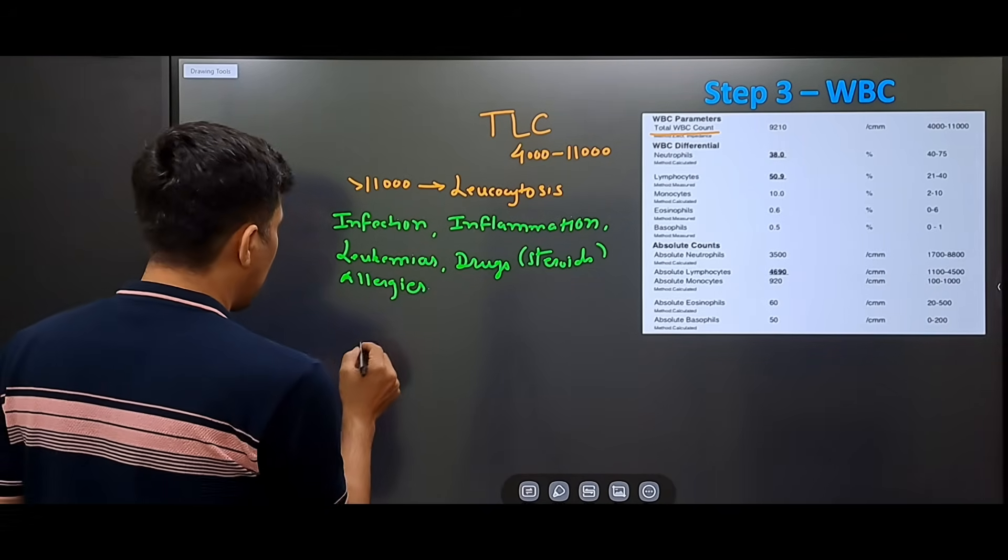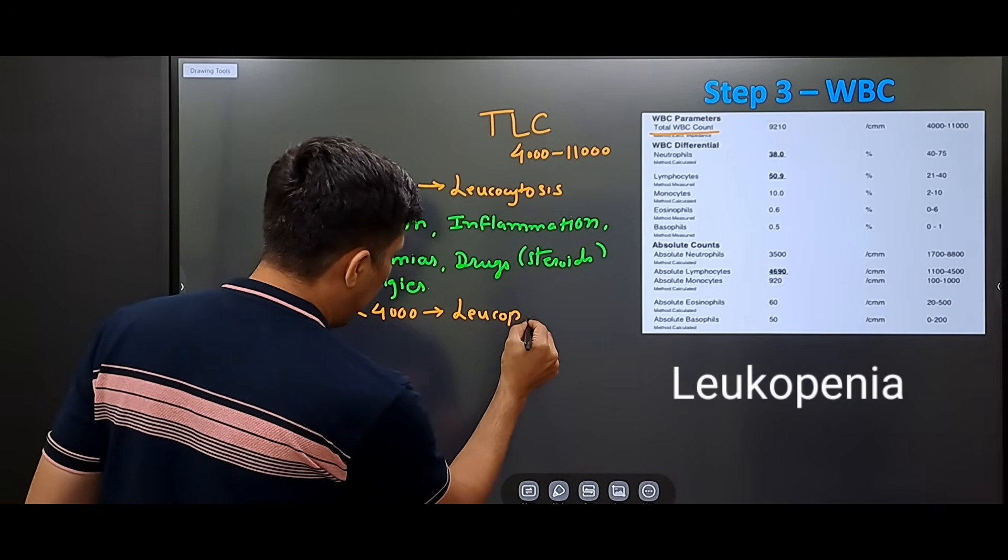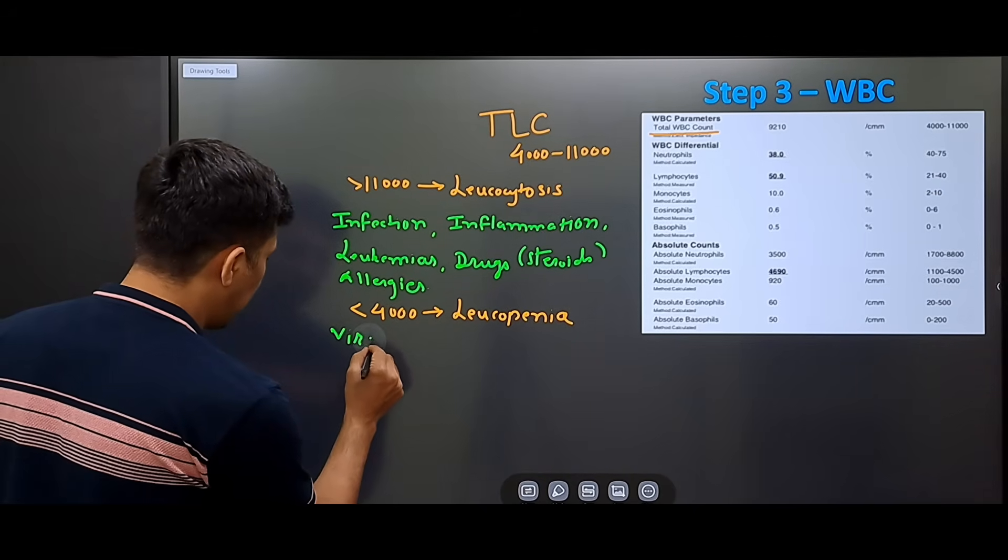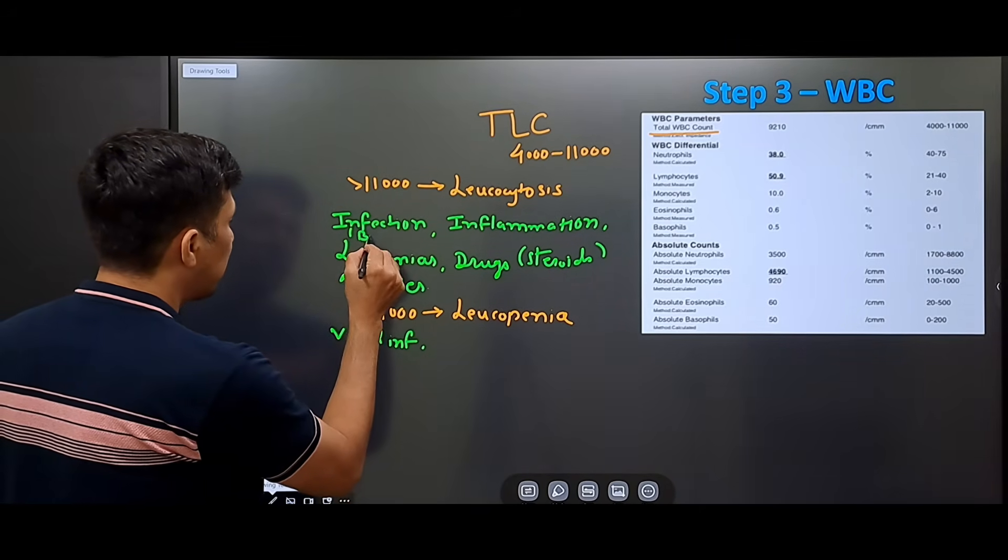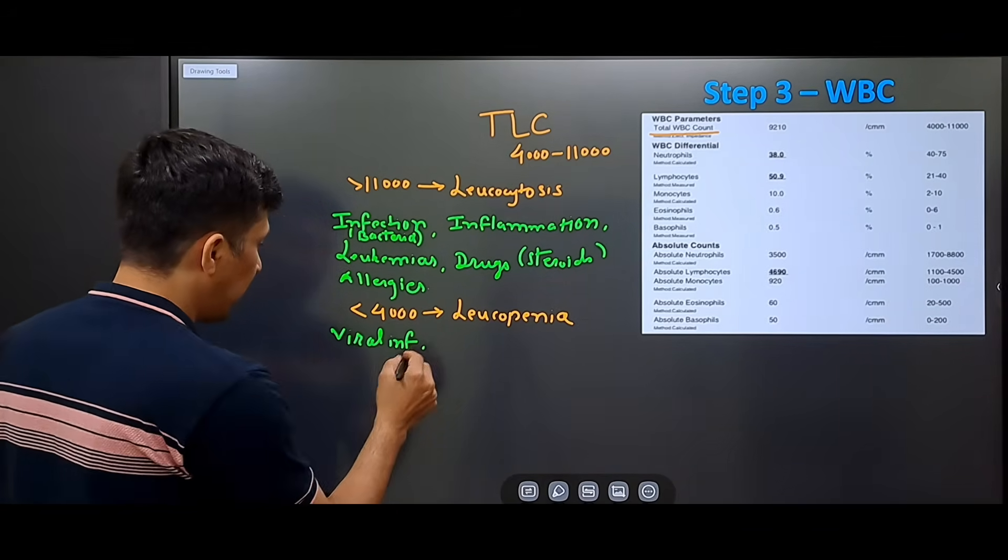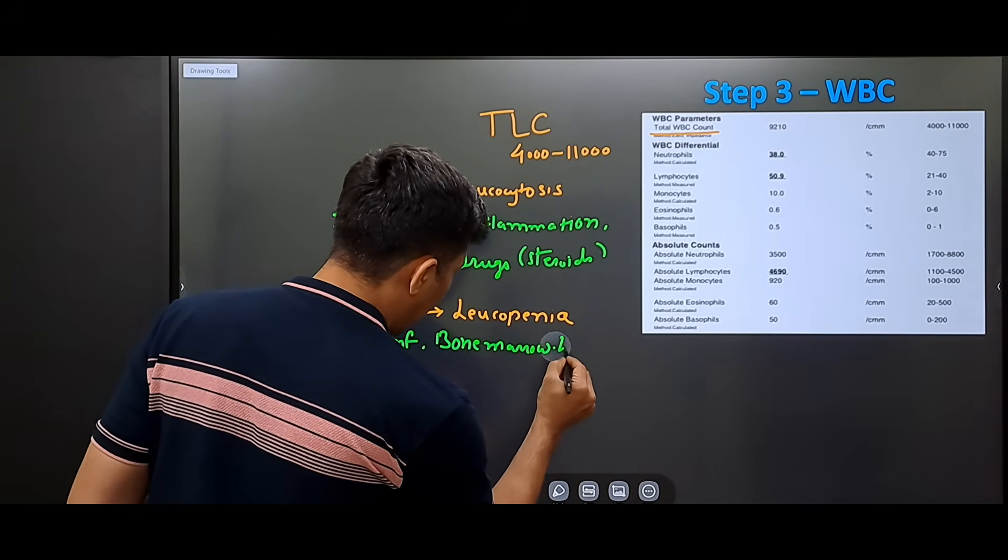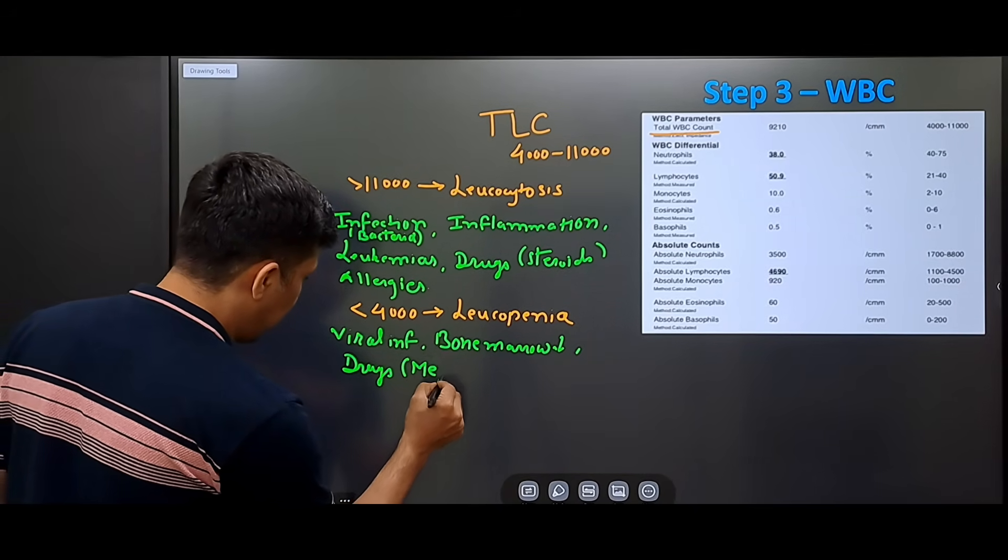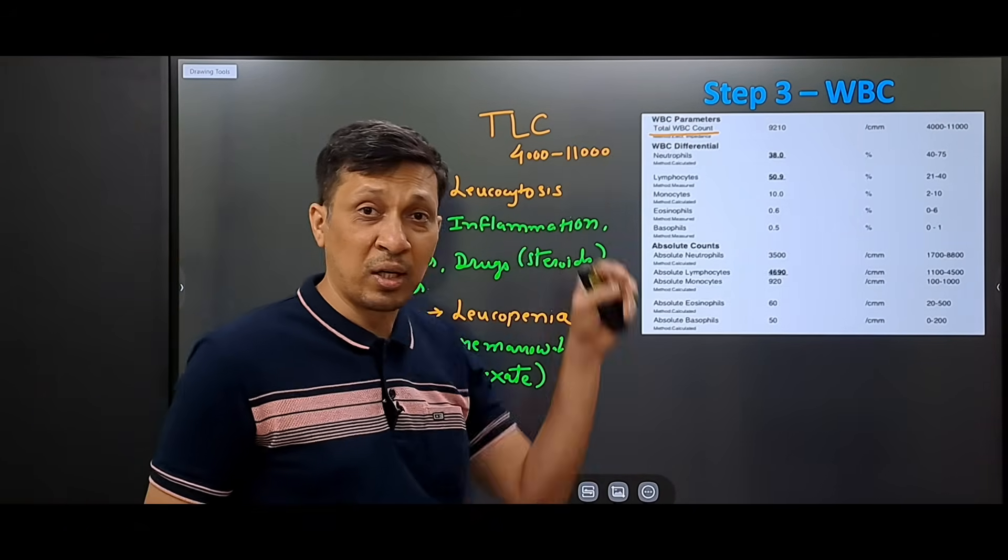If the count is less than 4000 then it is called as leukopenia. What are the conditions where you can see leukopenia? Most common is viral infections. In bacterial infection, you generally see leukocytosis. In viral infection, you see leukopenia. This can also be seen when there is bone marrow suppression and with certain drugs like methotrexate. This was our third step where we assess the total leukocyte count.